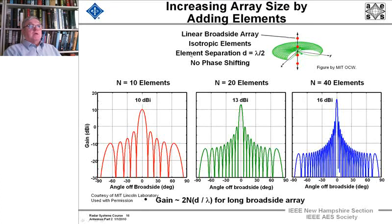Okay, so we've got a linear broadside array. These red dots is the array. They're isotropic elements. The spacing is lambda over two apart. There's no phase shifting, so we're just going to have a broadside beam perpendicular to the array.